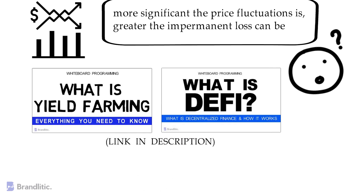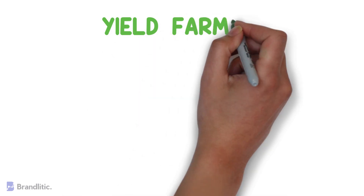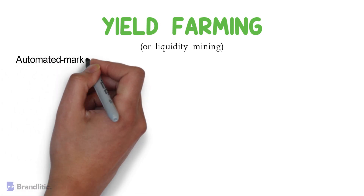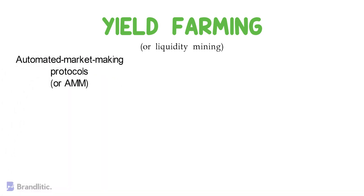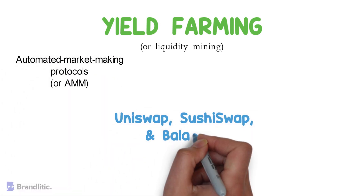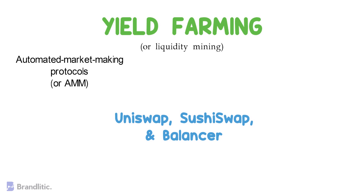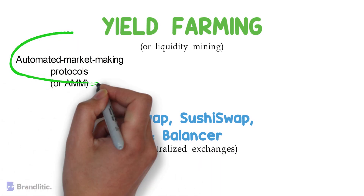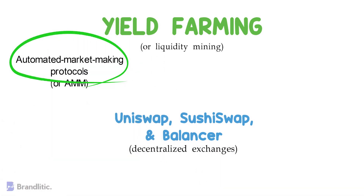Yield farming, also called liquidity mining, in DeFi has been at the heart of the market's explosion, led by automated market making or AMM protocols. Some projects like Uniswap, Sushiswap, and Balancer are known as decentralized exchanges, and they rely on such AMM protocols.